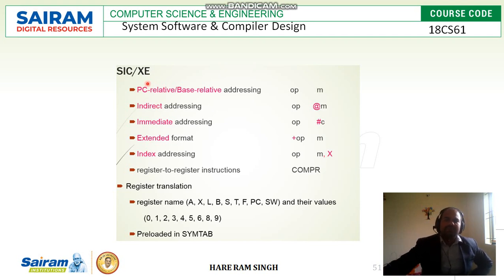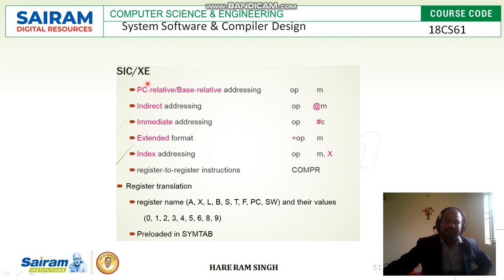If register-register instructions are there, the instruction length will be 2 bytes — format 2. The extended format ('+') is 4 bytes in length. Index addressing is also 3 bytes. Register-register instructions (COMP) are 2 bytes. So, format 3 is 3 bytes, format 4 is 4 bytes.